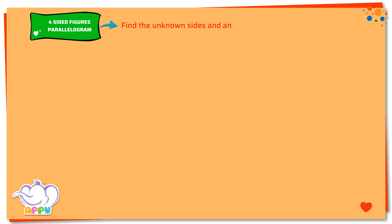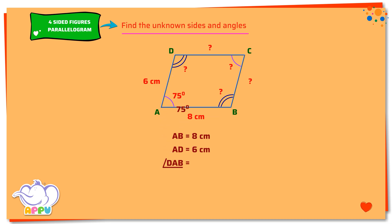Find the unknown sides and angles. ABCD is a parallelogram in which AB equals 8 cm, AD equals 6 cm, and angle DAB equals 75 degrees.